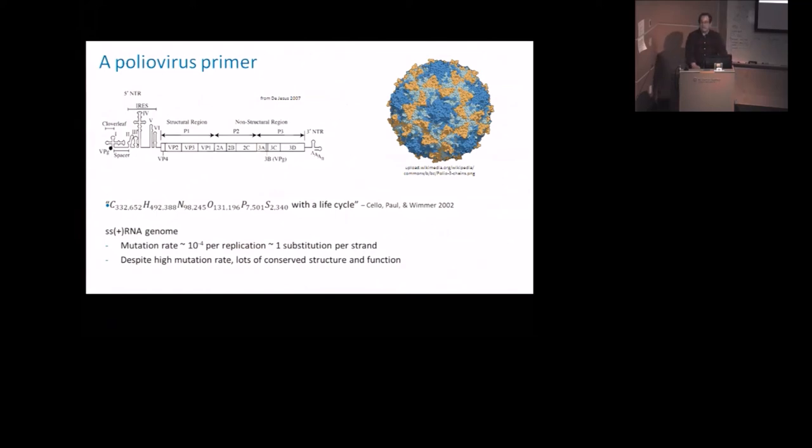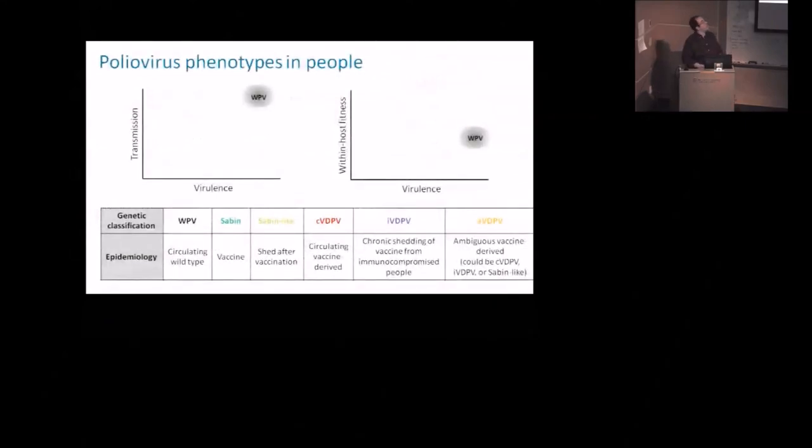When it translates, it makes errors very reliably. It has very little error correction mechanism, no known error correction mechanisms. And so it basically makes one error per strand. Every time it makes a copy, it makes a mistake somewhere on average. And yet at the same time, even though there's that really high mutation rate, there's a lot of conserved structure and function. And so what we see there is the interaction between the fitness in the ecological environment that the virus is experiencing in the host with the ability to generate change at every generation of translation.